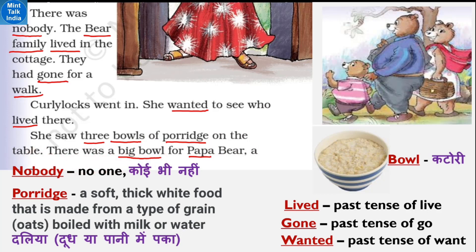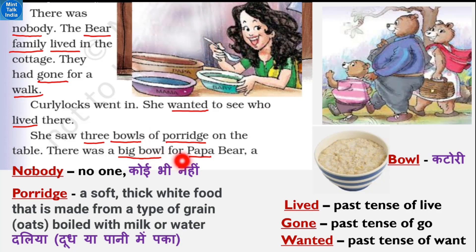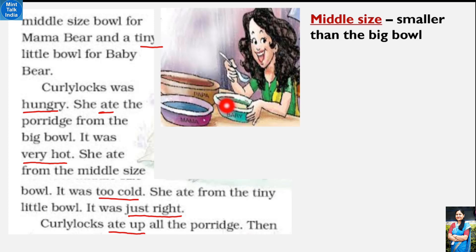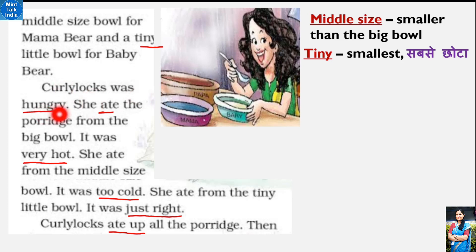Porridge matlab halwa - a soft thick white food that is made from any type of grain and milk or water boiled together. Usne wahaan halwe ki teen katoriyaan dekhin - on the table, table ke upar. There was a big bowl for papa bear - ek bahut bada bowl tha papa bear ke liye, kyunki hamare family mein papa hi sabse tall aur big hote hain. Uske baad a middle size bowl for mama bear - mummy bear ke liye ek middle size ka bowl, jo papa bear ke bowl se thoda chhota tha lekin sabse chhota nahi tha. Aur sabse chhota tha tiny little bowl for the baby bear - baby bear sabse chhota tha toh uska bowl bhi sabse chhota tha.